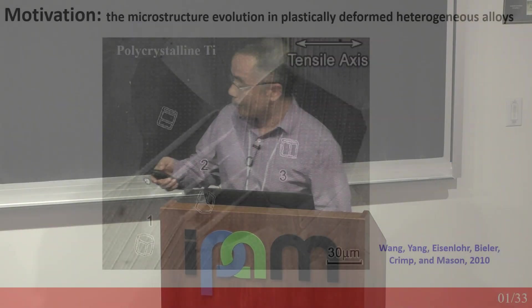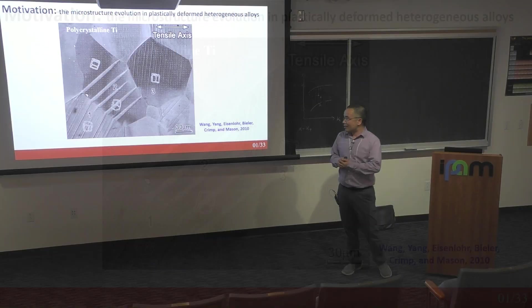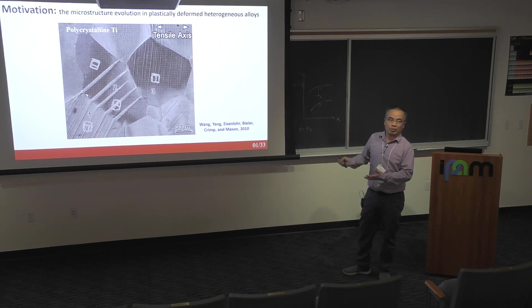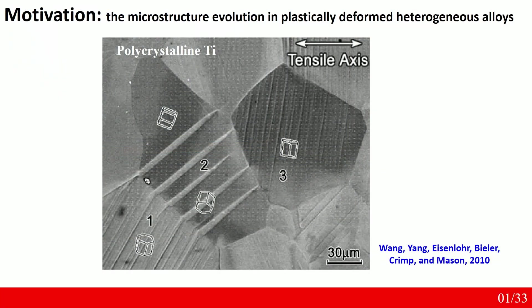I'm going to start with the motivation. The image I want to share with you is quite common — I believe 100% of people in this room know what this is. This is a polycrystal. When you deform it, the microstructure evolution can be very complicated. Here I'm showing microstructure evolution in titanium alloy produced by Professor Bieler's group at Michigan State more than ten years ago, which is quite well known in the community.